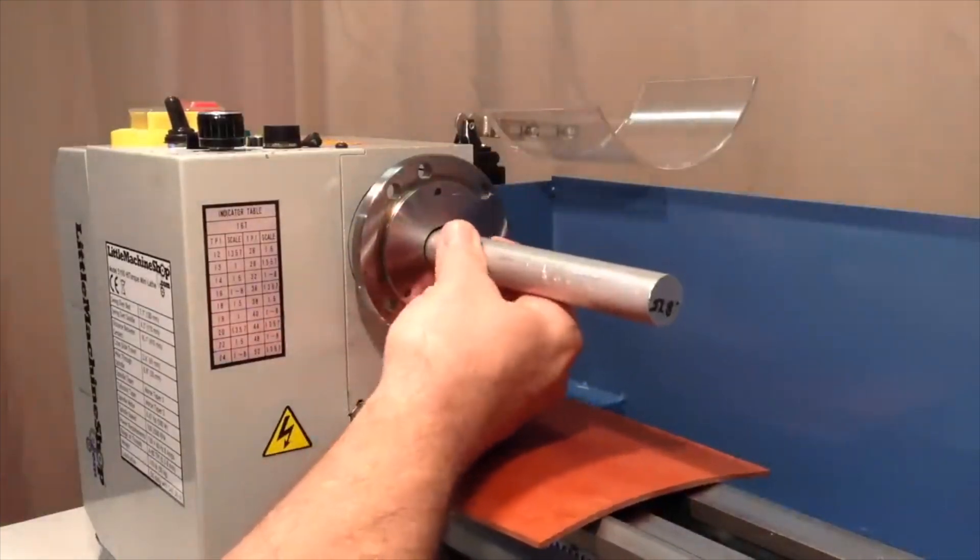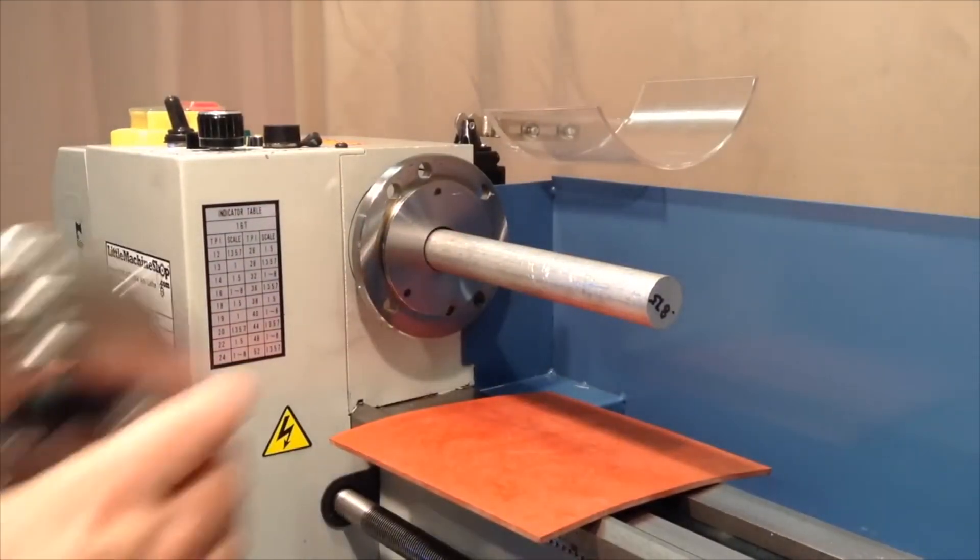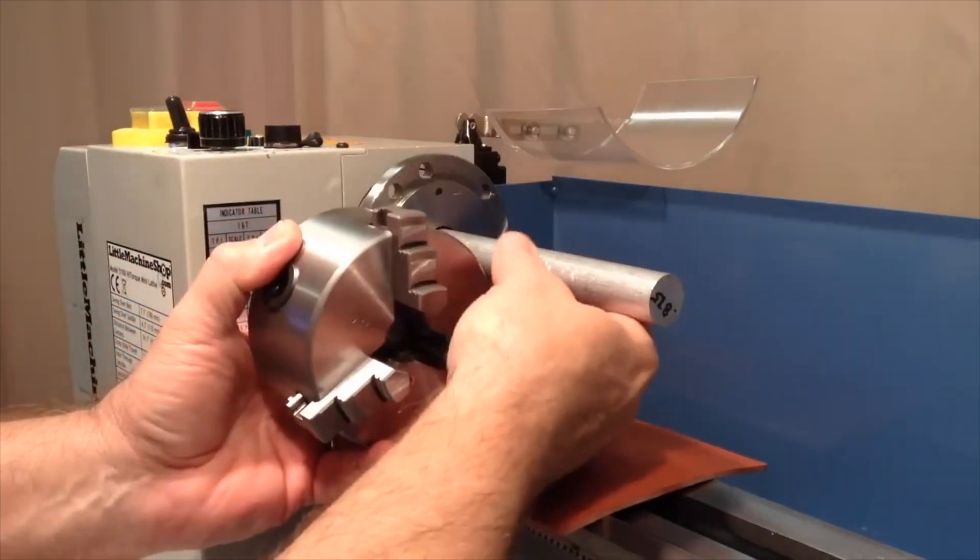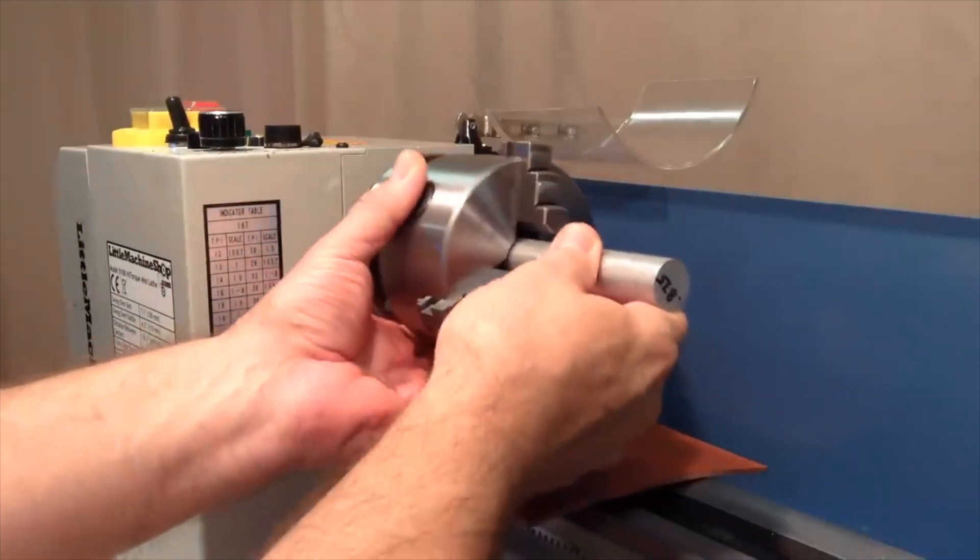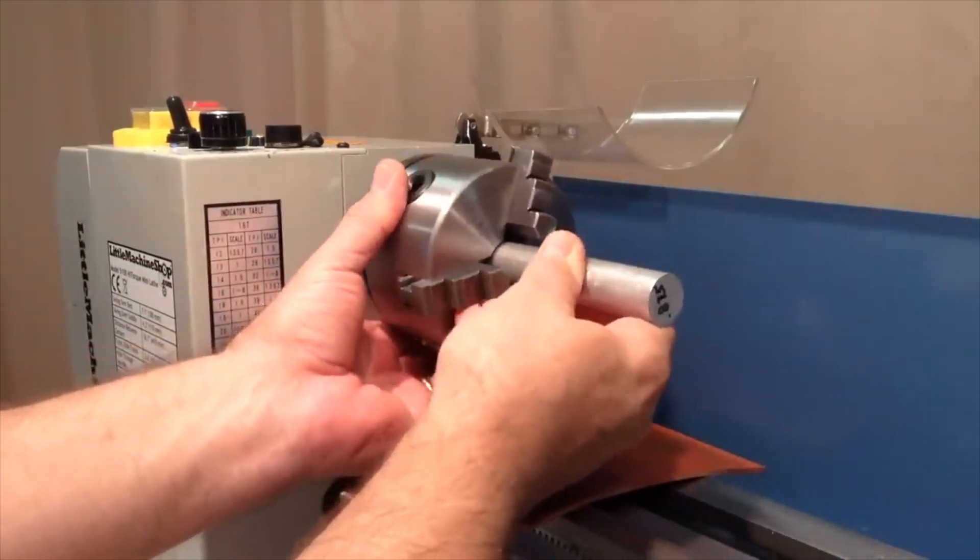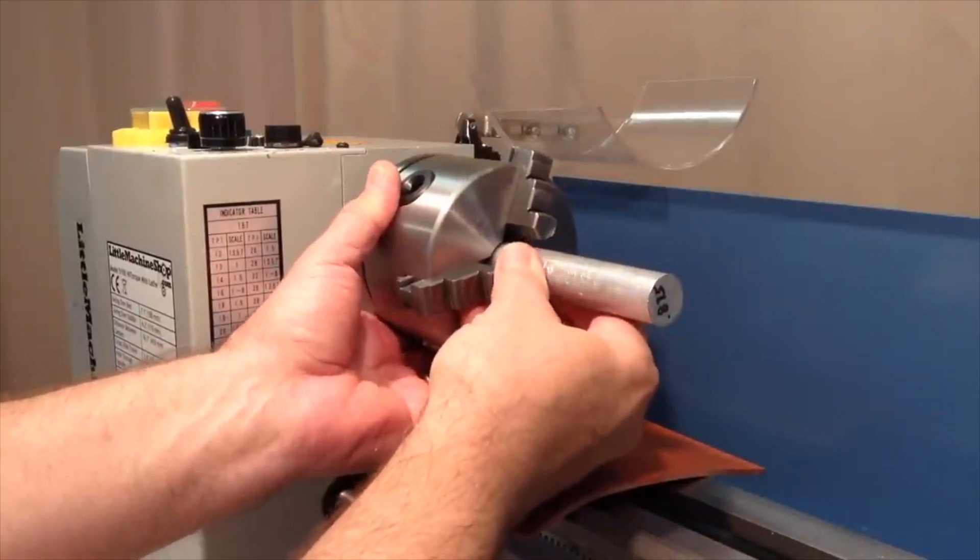But still if you've had the chuck mounted you get a considerable amount of length that you can work on even with a seven eighth inch diameter piece of stock, and that's certainly a big improvement over these previously standard stock three-jaw chucks.